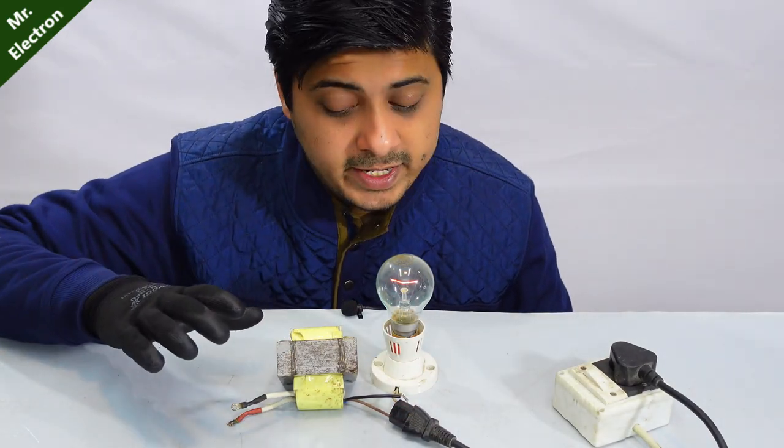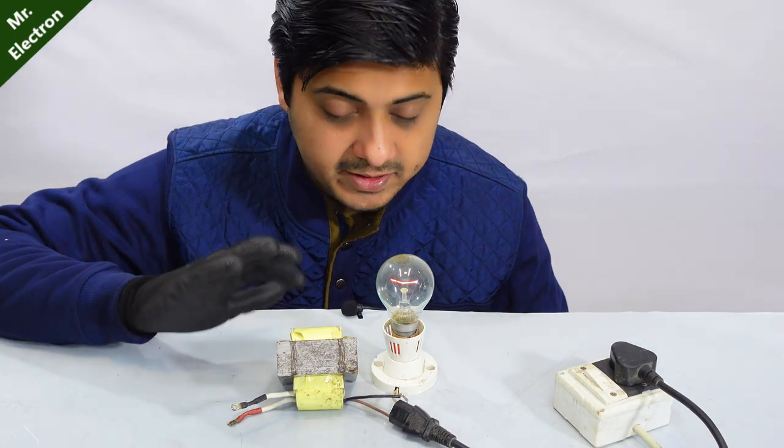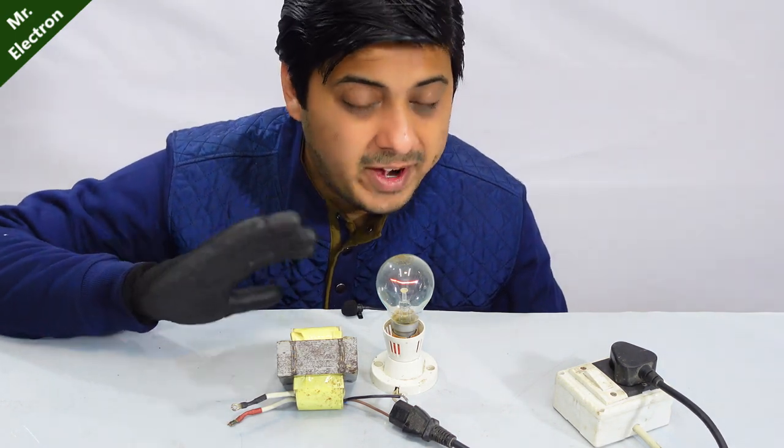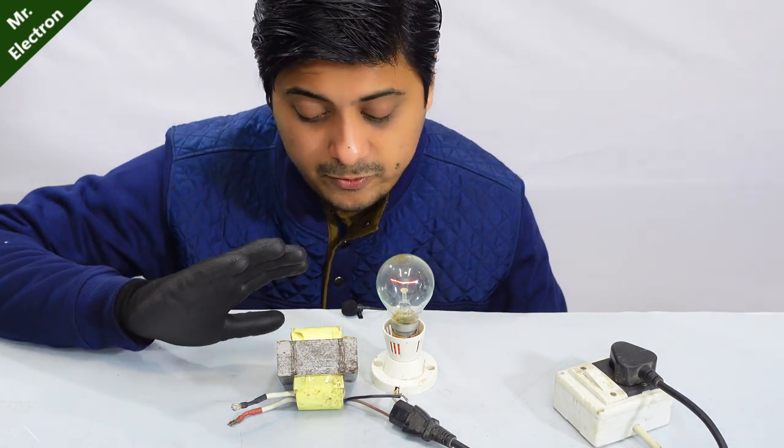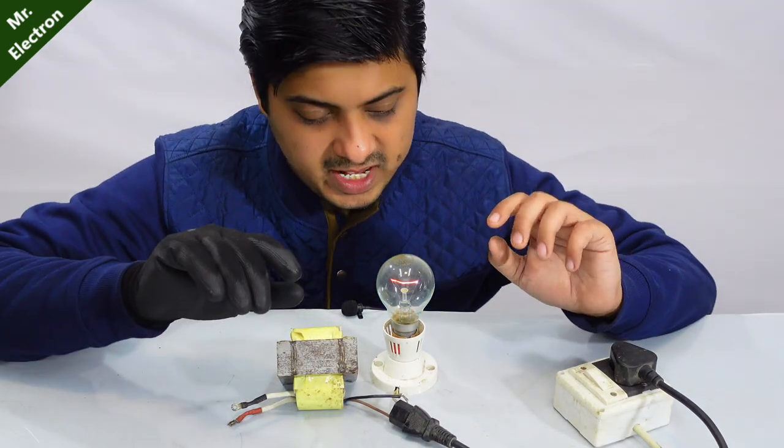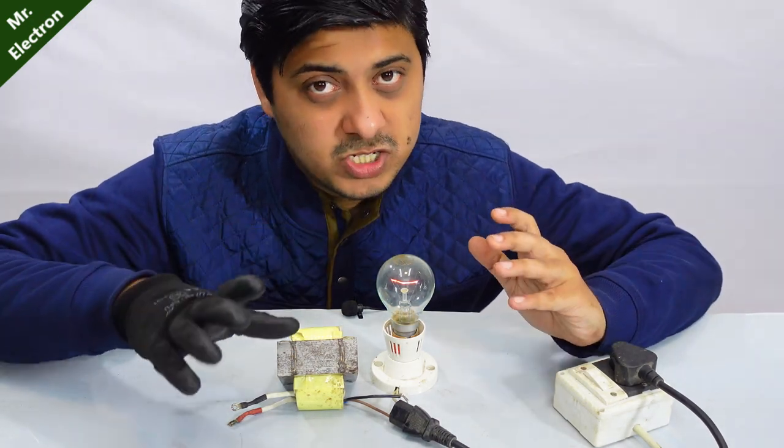Bulb glowing when connected in series with the transformer and no load connected indicates it's dead, the transformer is dead. But if the bulb would not have been glowing, then it would be perfect because at no load, transformer draws almost zero current.